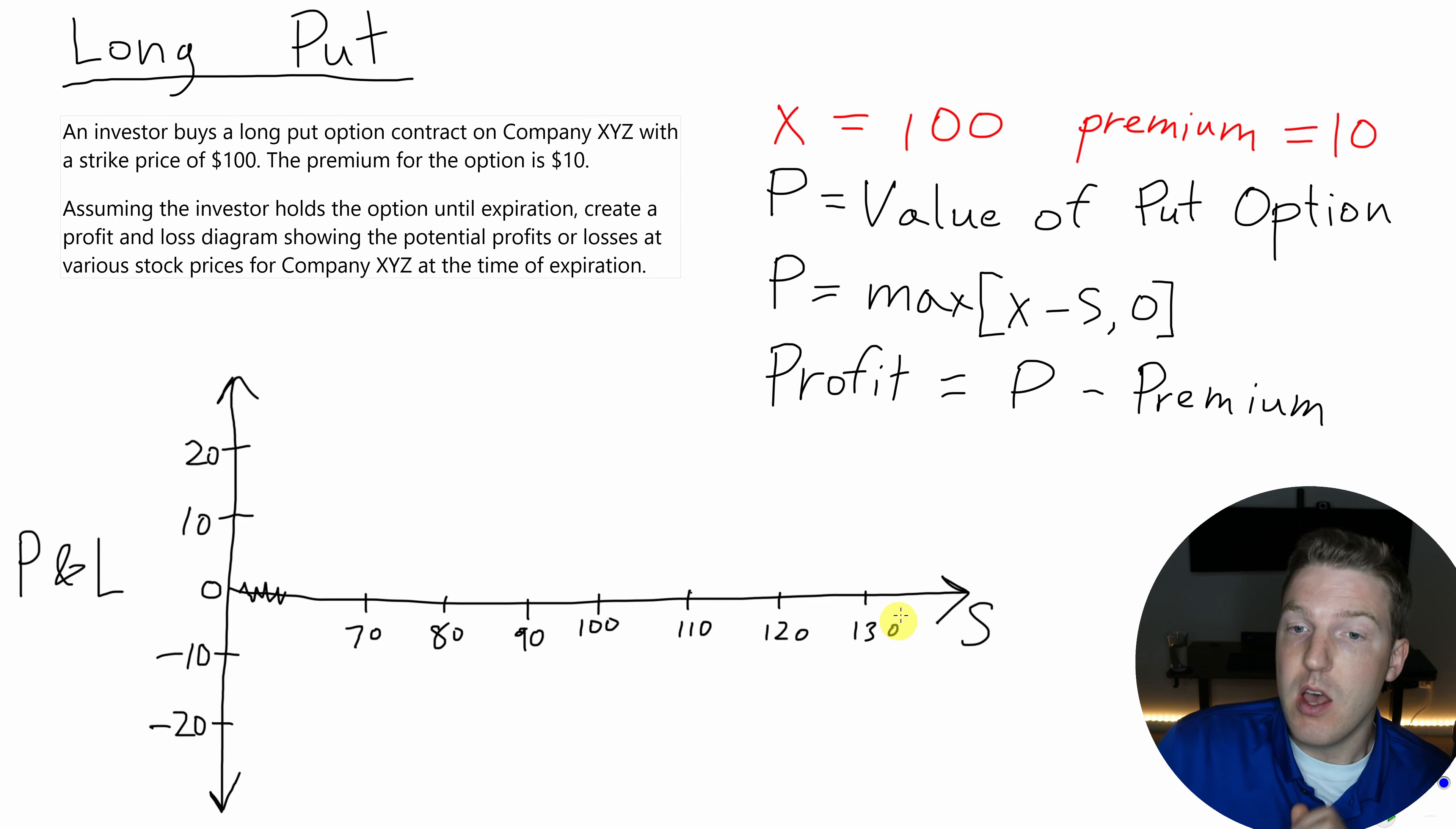But for the put option, the put option actually becomes more valuable if the price of the stock decreases. So if you can see if S goes down, then the difference of X minus S will increase in a positive direction. The profit to the person who is long a put option is going to be equal to the value of the put option minus the premium that they initially paid.